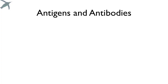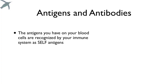Now one more thing we need to understand before we talk about transfusions and who's allowed to donate to whom, and that has to do with antibodies. So we've been talking about A and B antigens — these are particles on the cell surface, and you have tons of them. Not just the A or B; the body is full of antigens. They help cells to identify each other.